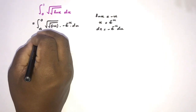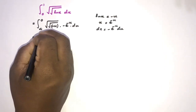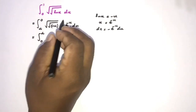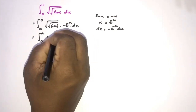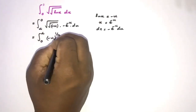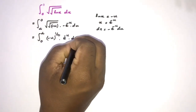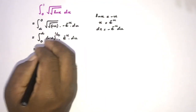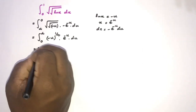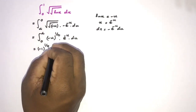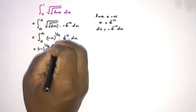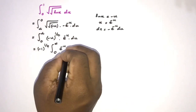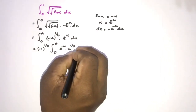When we swap the limits, the minus sign cancels, giving us 0 to infinity. The integrand simplifies: minus u to the one-half, raised to the one-half, gives u to the one-over-four. We can factor out minus 1 to the one-over-four as a constant outside the integral, leaving us with the integral from 0 to infinity of e to the minus u times u to the one-over-four du.